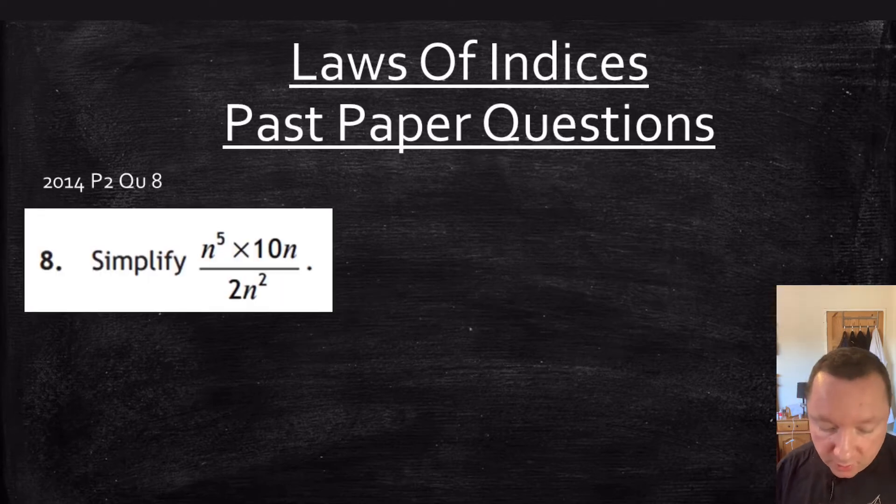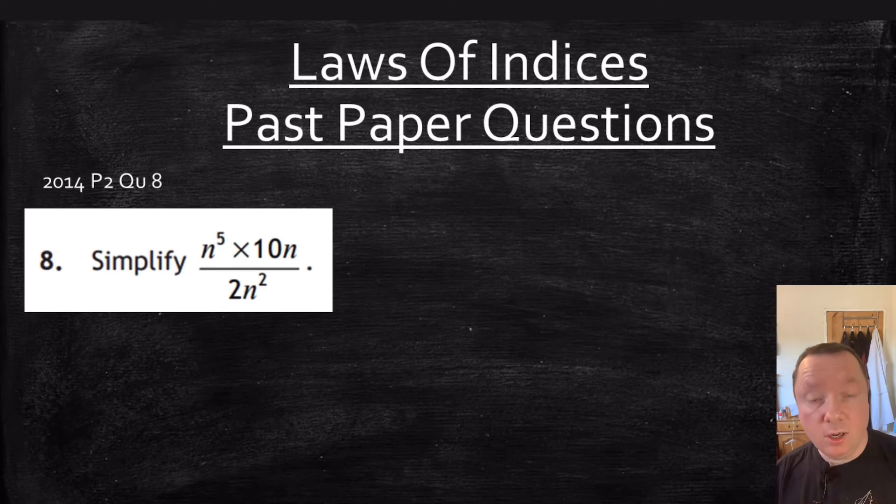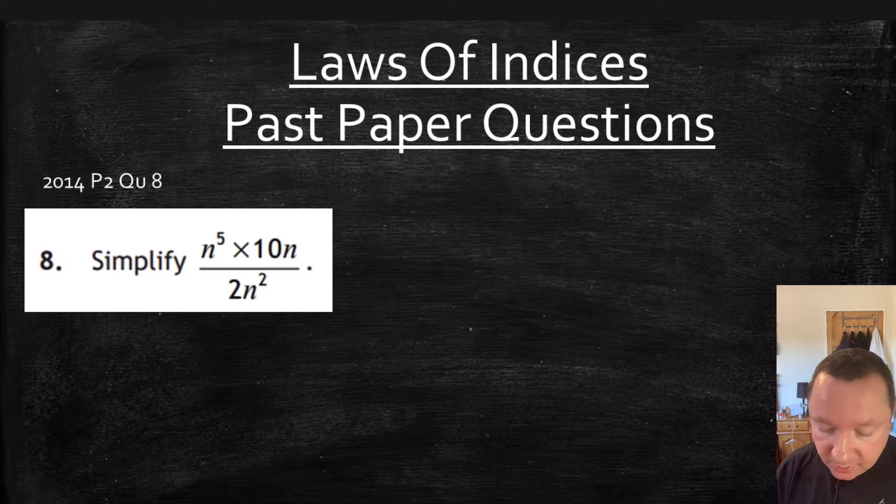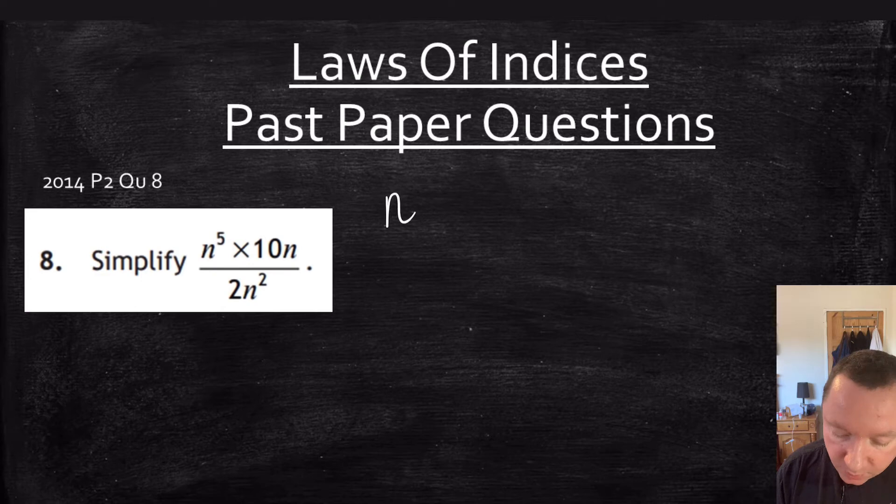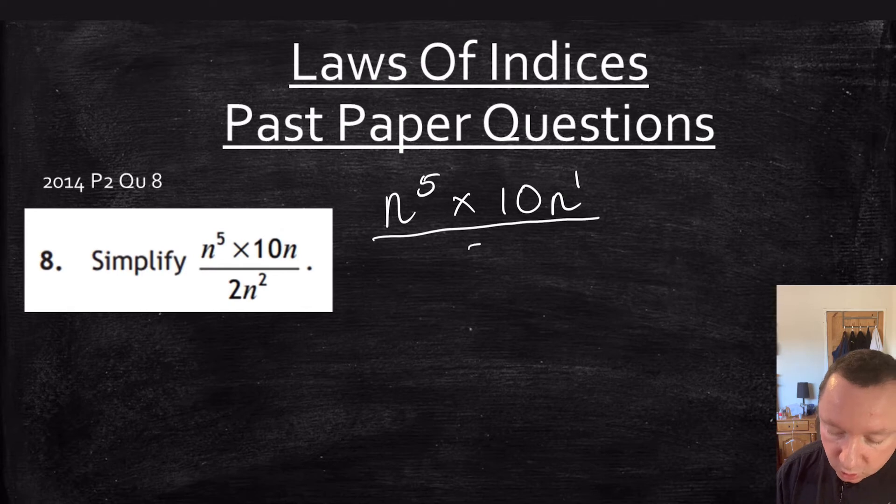Simple past paper question here from 2014 paper 2 question 8. Simplify n to the power of 5 times 10n over 2n squared. That is the same as n to the power of 5 times 10n, well that's to the power of 1, over 2n squared.